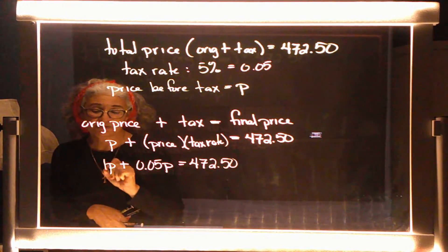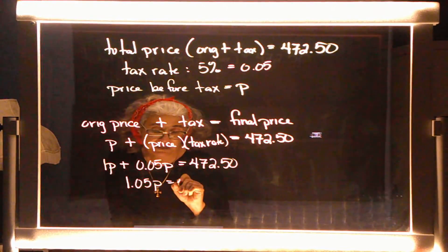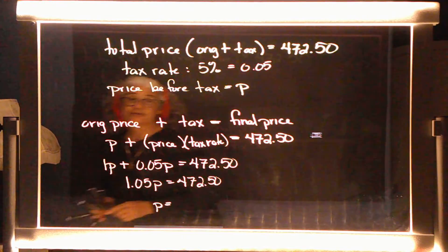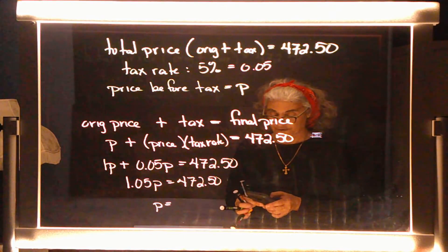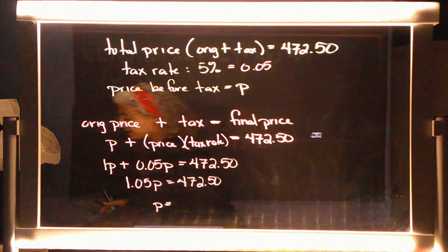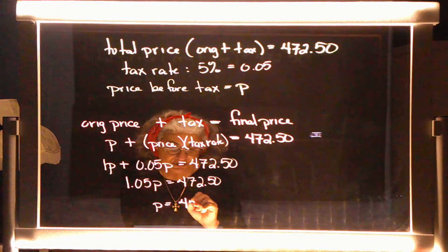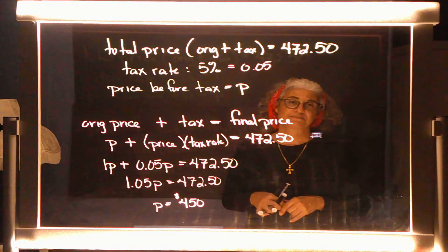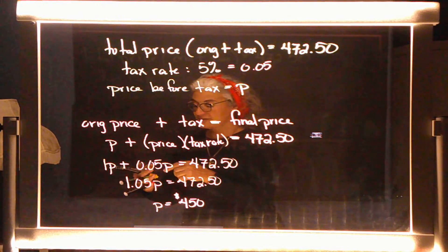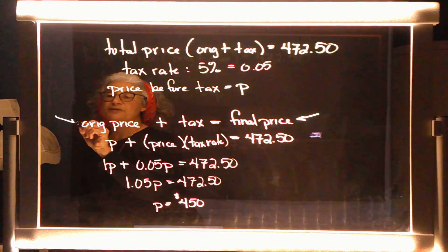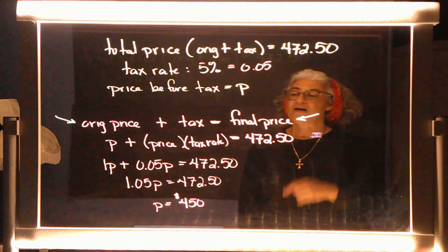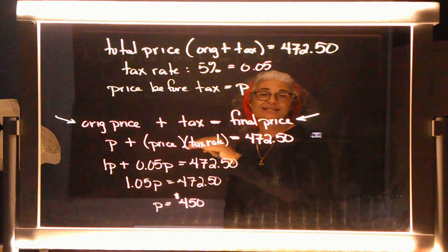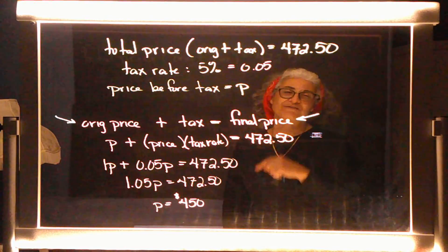There's a 1 in front of the P, so combining gives 1.05P = $472.50. Dividing $472.50 by 1.05 on the calculator gives $450. That was the original price of the TV sitting on the shelf. Remember, the most important step after writing down the given information is talking it out in words — when you can think through the logic in words, you know where everything goes in the equation.